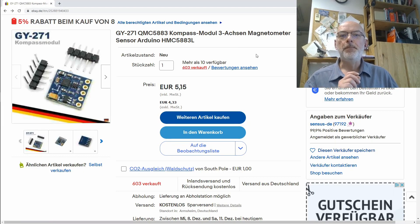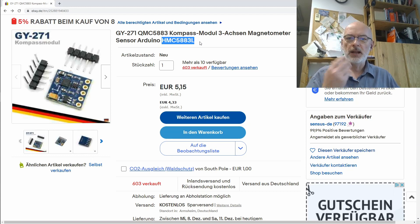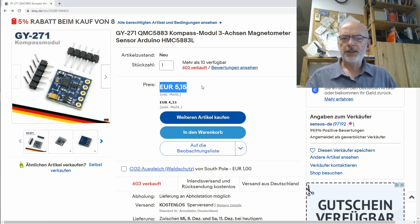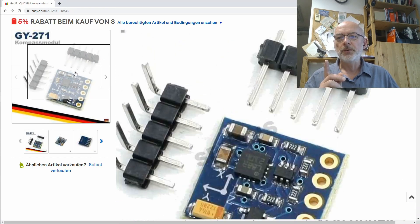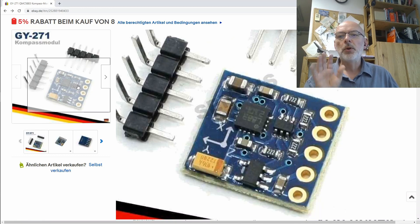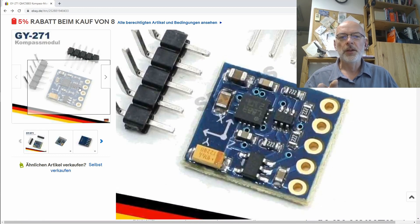I almost forgot the eBay listing. This was the GY-271 QMC 5883 compass module, a 3-axis magnetometer sensor for Arduino. It's not fully compatible with the original Honeywell HMC 5883L as we saw. I paid 5.15 euros for it, so dirt cheap. It was inside Germany from Sensus. Please note, not all modules with that chip have that elaborate level shifting. Have a close look at the photos on the eBay listing.